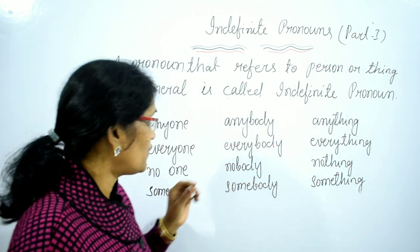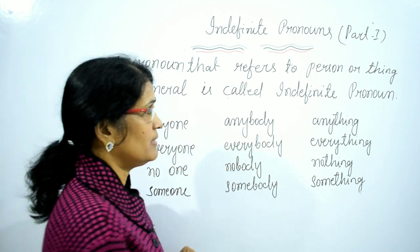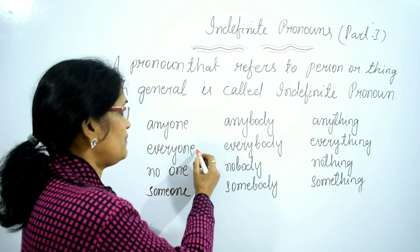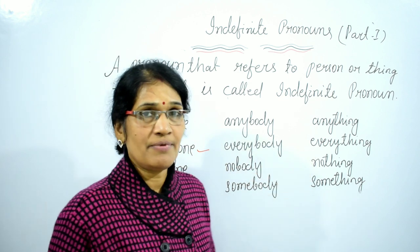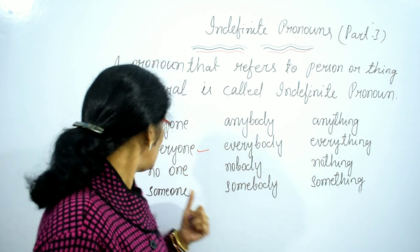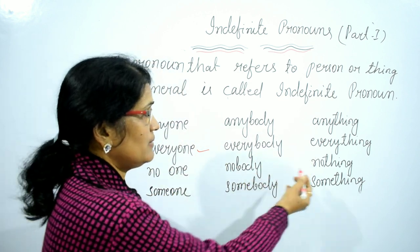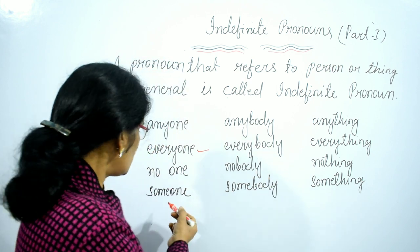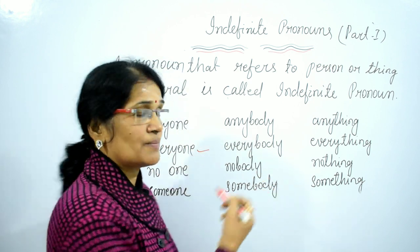The words are: Anyone, Anybody, Anything, Everyone, Everybody, Everything, No one, Nobody, Nothing, Someone, Somebody, Something.